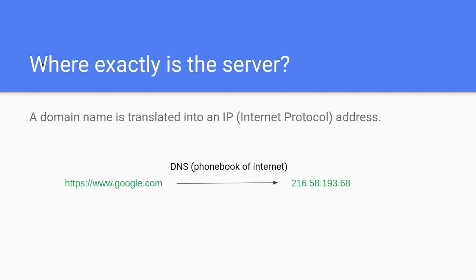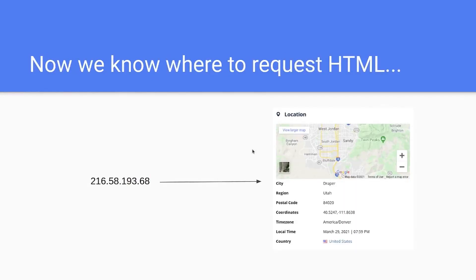Where exactly is this server located? A domain name is translated into an IP address by DNS. DNS is the phone book of the internet. Just like a phone number, this is an IP address — google.com actually points to this IP right here. It might change in the future. And this IP is located in Utah.